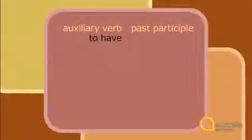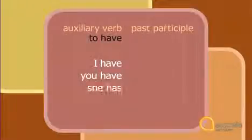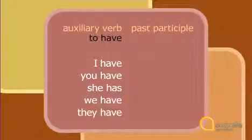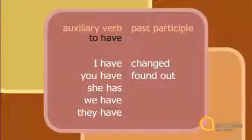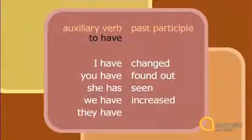Let's have a look at how we structure the present perfect tense. We use the auxiliary verb 'to have' and a past participle. So here's our auxiliary verb 'to have': I have, you have, she has, we have, they have — and then a past participle. For example: changed, found out, seen, increased, or helped.